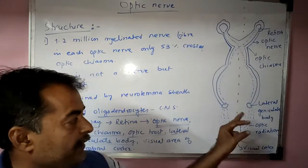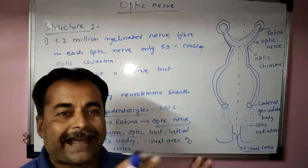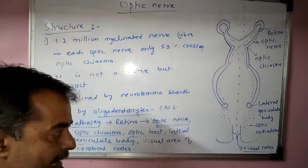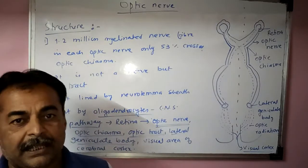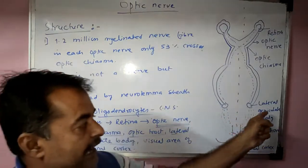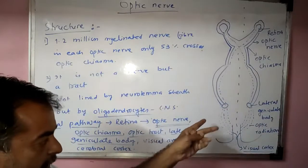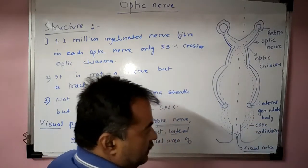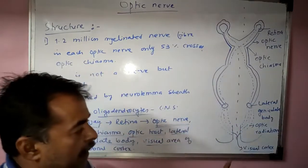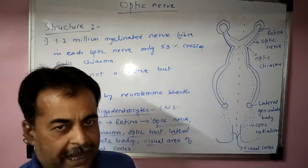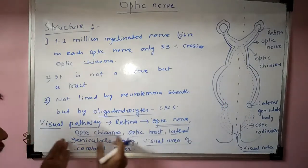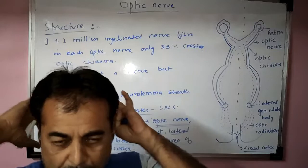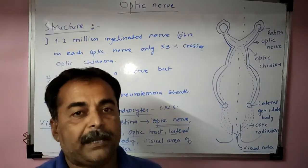From the optic chiasma, the optic tract goes to the lateral geniculate body. The lateral geniculate body is part of the subthalamus, and the subthalamus is part of the diencephalon, which is a deeper part of the forebrain. From the lateral geniculate body, the optic radiation travels to the visual area of the cerebral cortex, which is on the occipital lobe, and the image is formed. This is the complete optic or visual pathway.